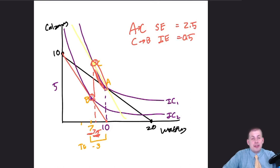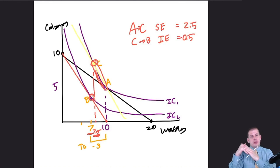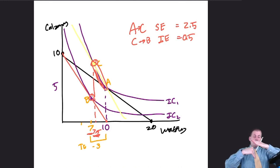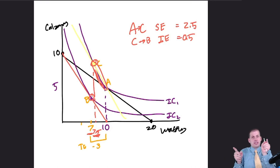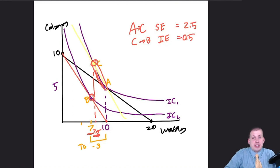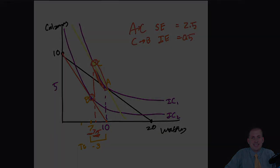Refer to the other YouTube videos linked on this page to see other examples. They all go through the same mechanics: draw the original budget line, show the new budget line, move the new budget line back so it's tangent with the original indifference curve, then figure out the distance between the points. That's the mechanics of how you find substitution effects and income effects using budget lines and indifference curves.